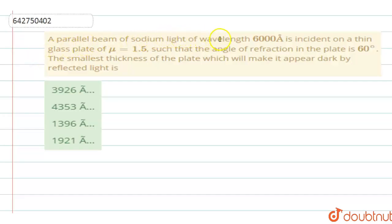A parallel beam of sodium light of wavelength 6000 angstrom is incident on a thin glass plate of refractive index 1.5, such that the angle of refraction in the plate is 60 degrees. The smallest thickness of the plate which will make it appear dark by the reflected light is.